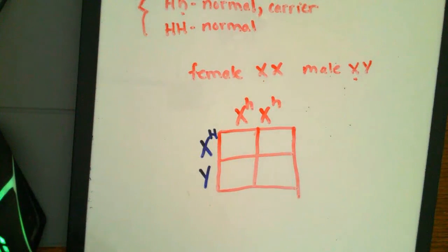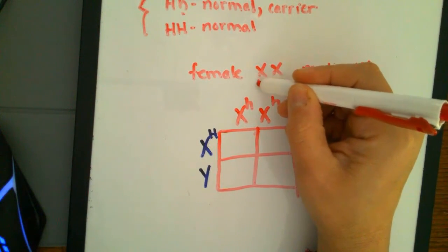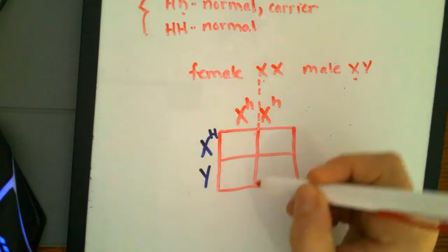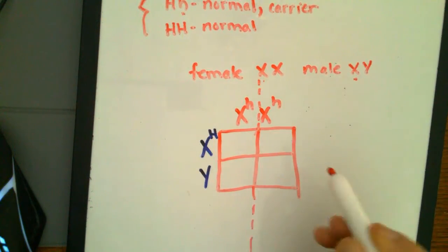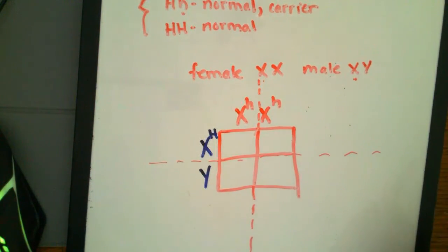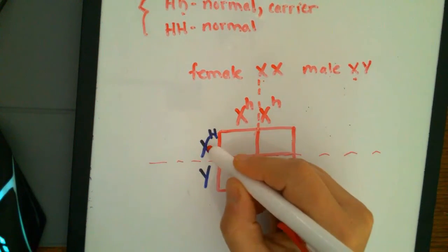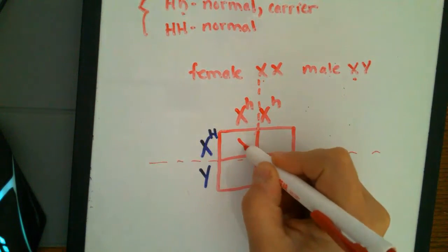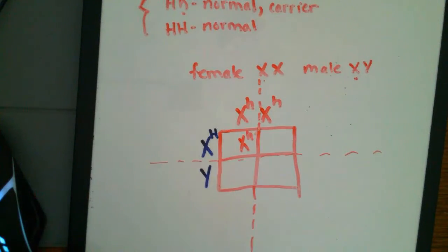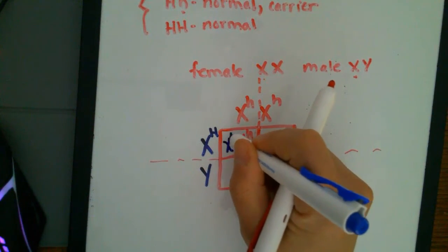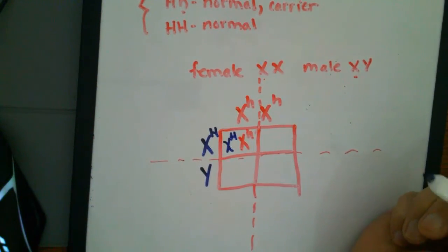And now you would fill in your box. So sometimes what I'll do to kind of make it easier to visualize, I'll just extend this line out here, and extend this line out here. So you can kind of see. So you would take this one and fill it in and this one and fill it over. So you'd end up with XH, little H, and a big H.